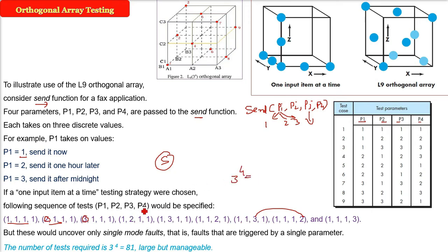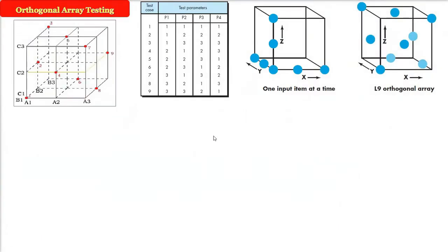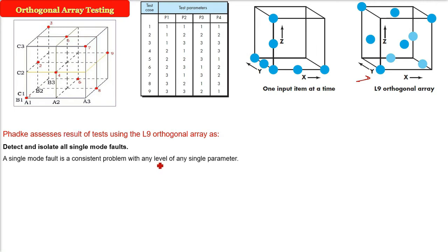There are three variables—four variables—and each variable can take three options, so 81. But when we go ahead with various numbers, we have a problem. So Fadke actually introduced it. Actually, this is called a Taguchi design. So Fadke says that we can have it solved by L9 orthogonal array, orthogonal array testing.